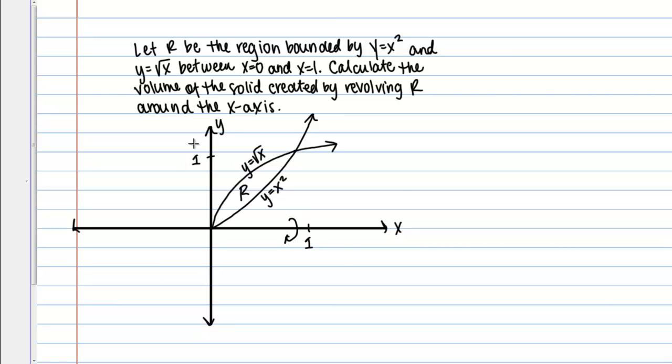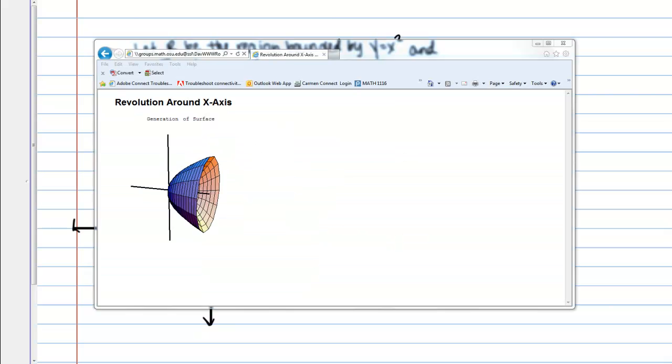Let's quickly see the shape created by this rotation. Here's my region bounded by the graphs of x² and √x. You can picture rotating it around the x-axis, and we get a shape that looks like this. Our goal is to find the volume of this three-dimensional shape.